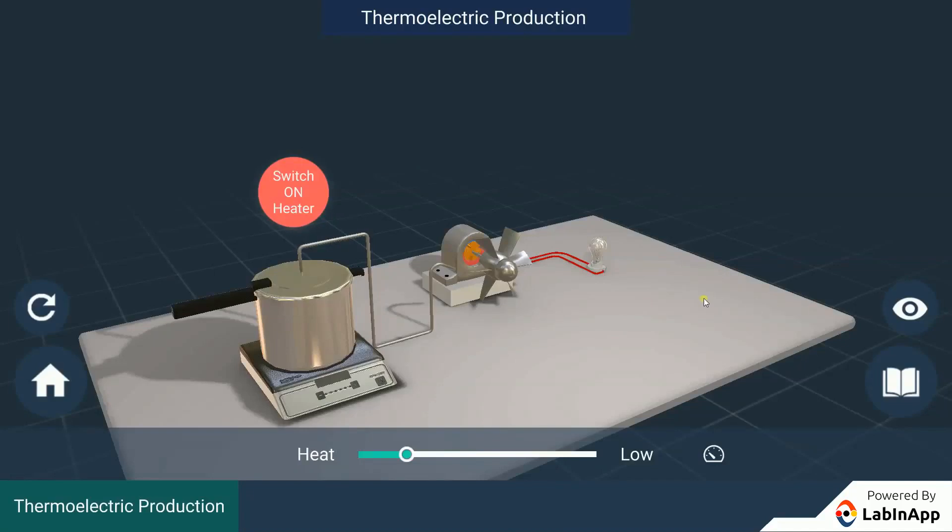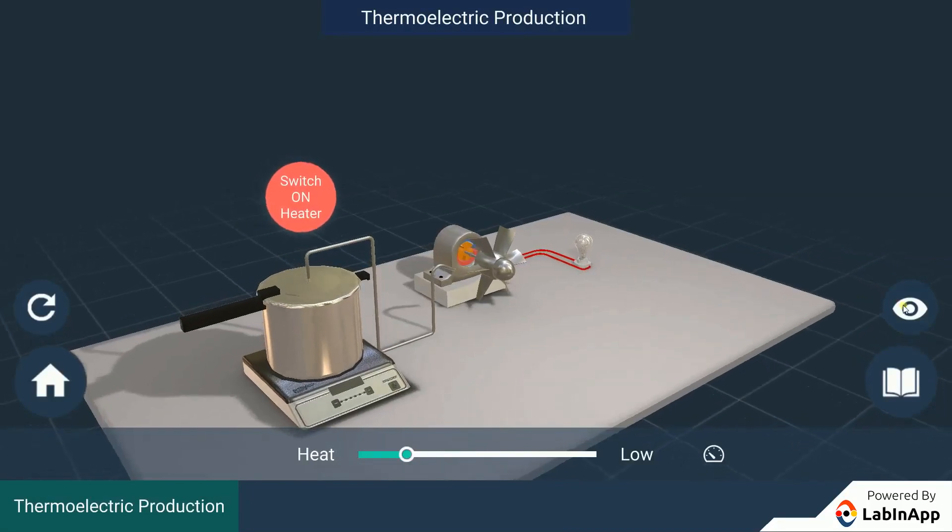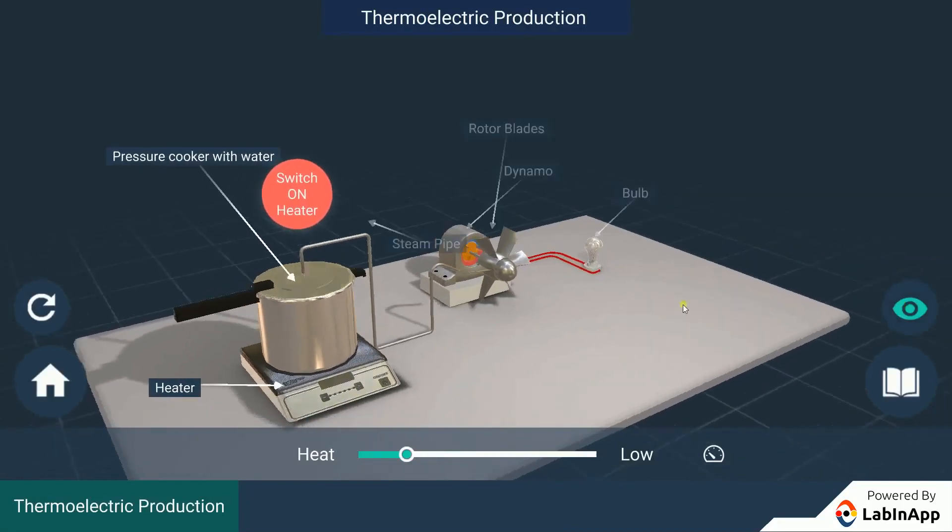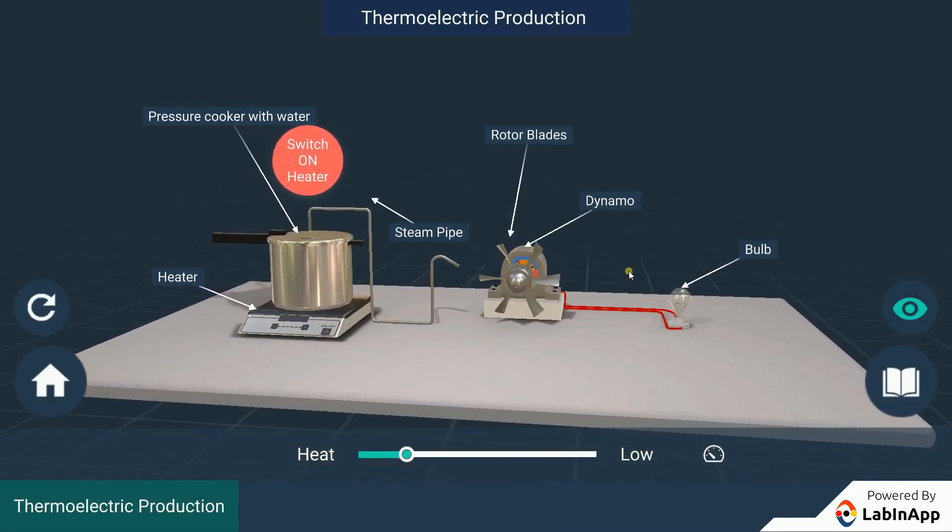Let us produce some electricity at our own plant and see what goes into producing electrical energy. We have set up a pressure cooker filled with water on a heater.